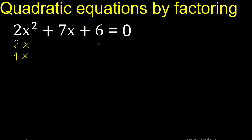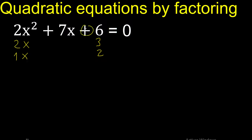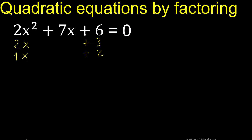Two numbers that multiply to 6: 6 multiplied by 1, or 3 multiplied by 2. Let's try — plus minus minus is plus, or plus plus is plus. Let's try plus because here is plus.